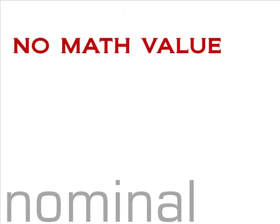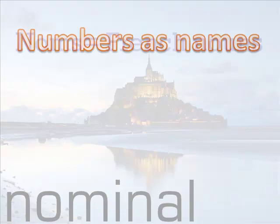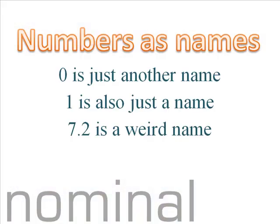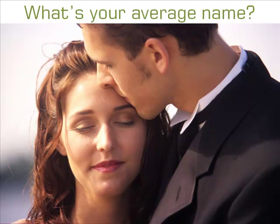It is called a nominal measurement because there is no mathematical value to the numbers. There is simply names. It wouldn't make sense to add up the ID numbers, or to take their average. It would be just as silly as asking the average of the names Judy, Jorge, and Amy.